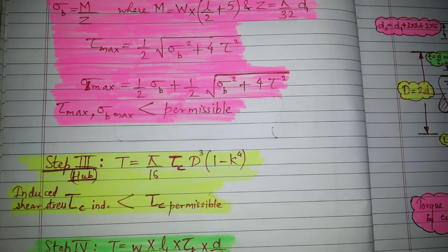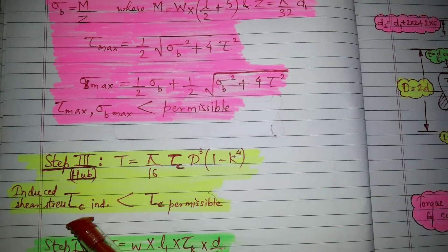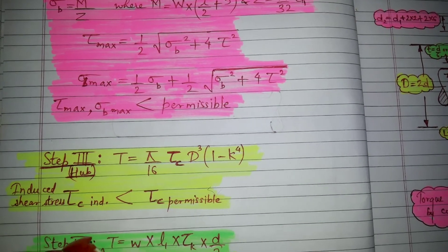Step number three we need to find regarding the induced shear stress which can be induced for the hub and it should be less than the permissible.